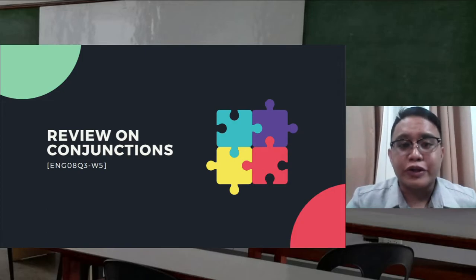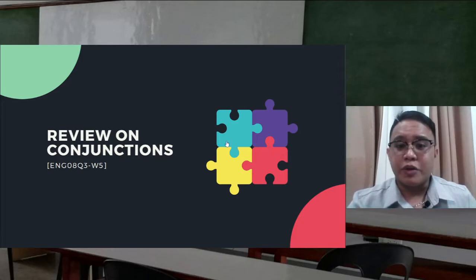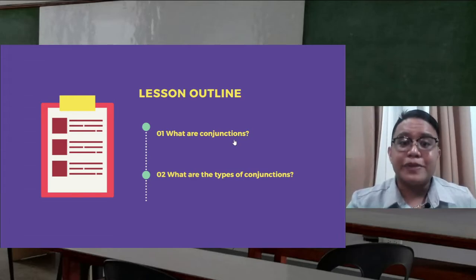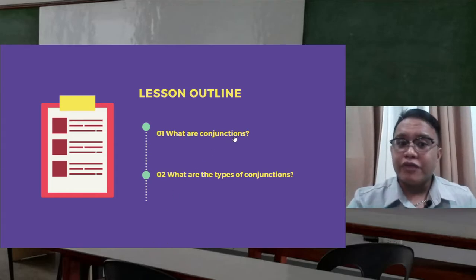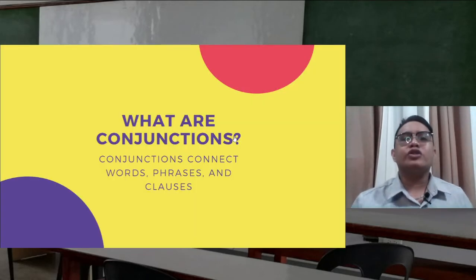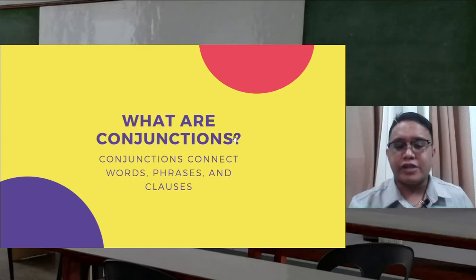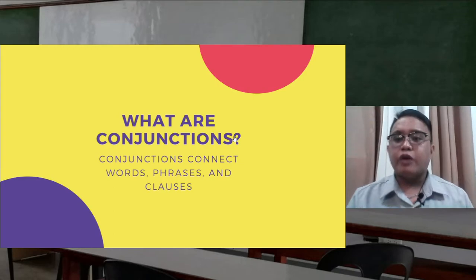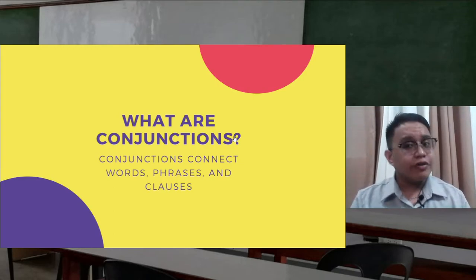In this video we're only going to talk about conjunctions. Today we are going to learn what conjunctions are and identify their types. Conjunctions connect words, phrases, or clauses — from the word 'conjunct,' meaning joining together. The different kinds of conjunctions join different kinds of grammatical structures, and conjunctions are also called joining words.